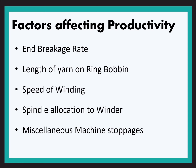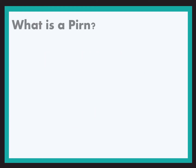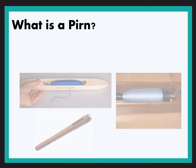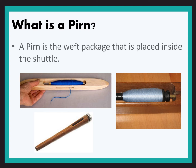Now let us start with a new process — pern winding. The first question is: what is a pern? In shuttle looms, a shuttle is used to pass the weft through the shed from one side of the machine to another. A pern is a weft package that is placed inside the shuttle. As you can see in the image, the pern is placed inside the shuttle, and its dimensions need to be governed according to the shuttle dimensions.